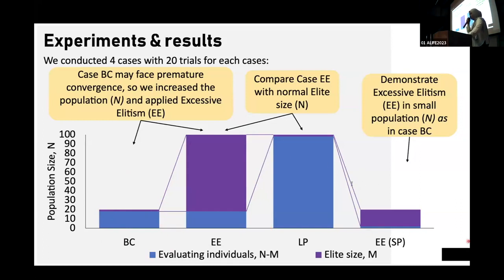After that, for further investigation, we experimented case EE. Case EE we increased the population size and we applied our method, which is excessive elitism method, in this case. And after that we carried out case LP, which has similar population size to case EE, but we did not apply our method to case LP. And finally we demonstrate our method in a small population size which is similar to the baseline case.